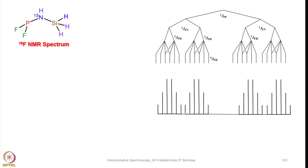Now let us look into the 19F NMR spectrum — it looks a little bit complicated but it is not really. First of all we have to analyze how each multiplet has 6 lines here. If we consider 19F NMR first, it will be split into a doublet because of phosphorus coupling — this is the PF coupling. Next, this is coupled with 2-bond 15N, so each one will be a doublet — this is FN coupling. And then each signal of fluorine is coupled with hydrogen to give another doublet.